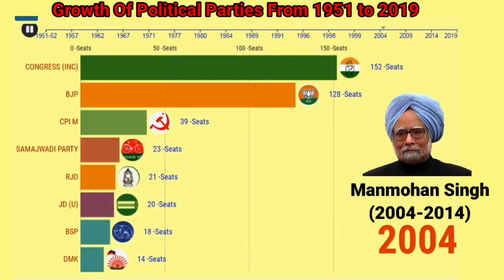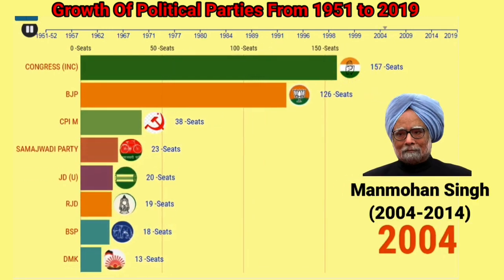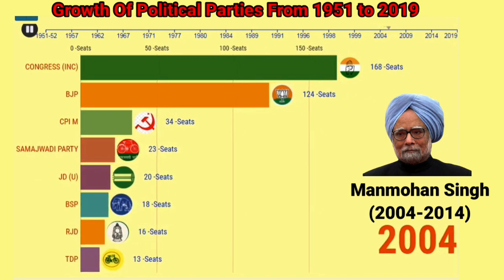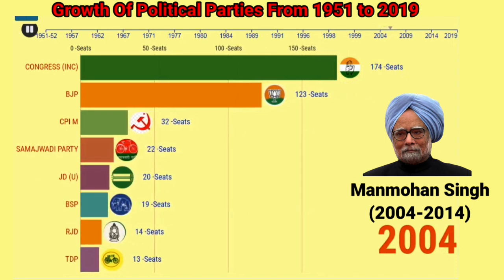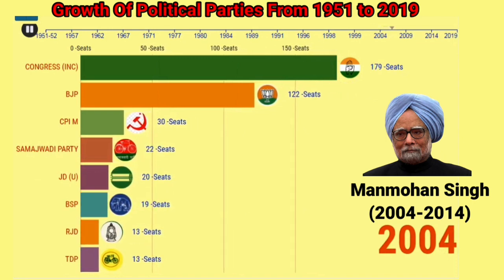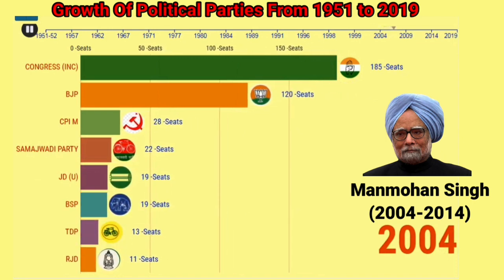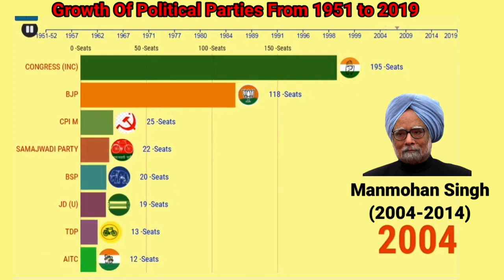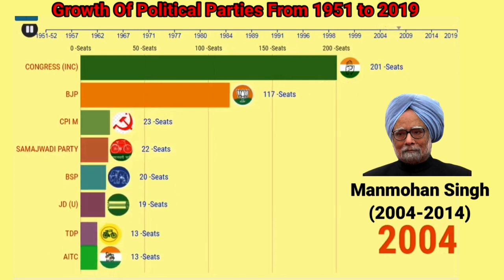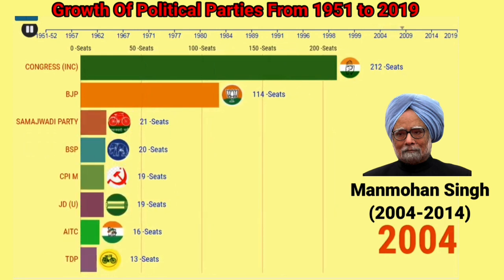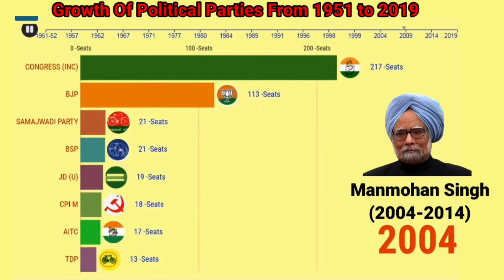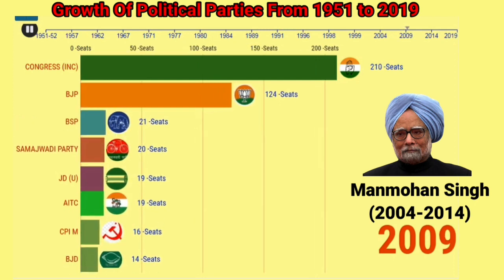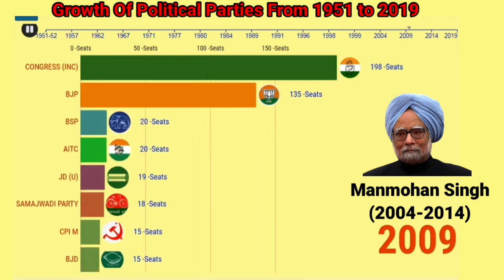In 2004, Manmohan Singh became the Prime Minister of India from the Indian National Congress by forming the United Progressive Alliance, and he served as Prime Minister of India from 2004 to 2014.